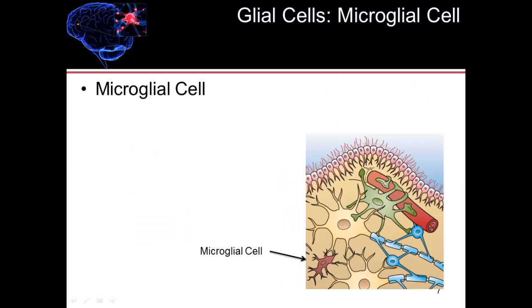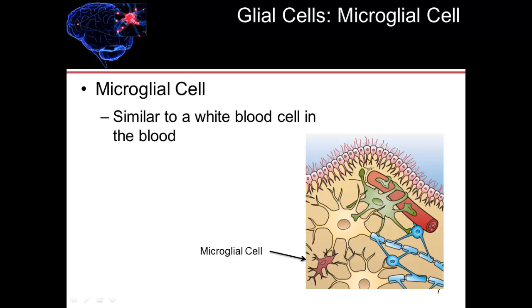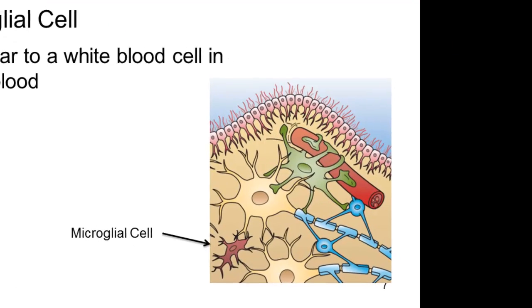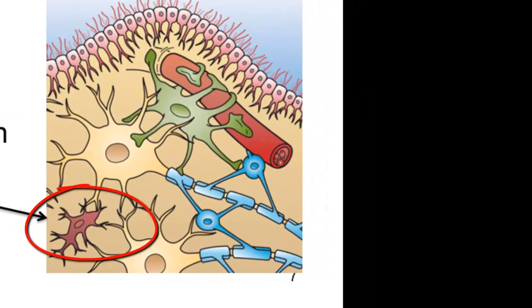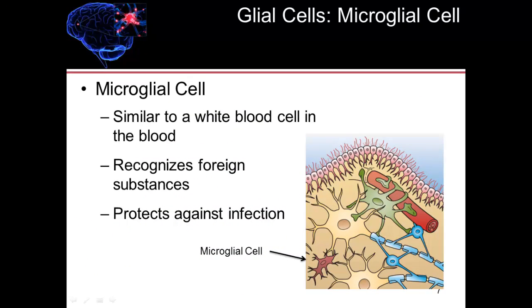Microglial cells, another type of glial cell, are similar to a type of white blood cell in the blood — very similar to a phagocytic cell such as a neutrophil or a macrophage. These microglial cells recognize foreign substances and actually engulf and try to destroy them. They're very important against infectious agents getting into the brain. When there is no infection, these cells just travel around between the neurons. If there should be some type of infectious agent, they become activated and engulf and destroy whatever is seen as foreign within the brain.